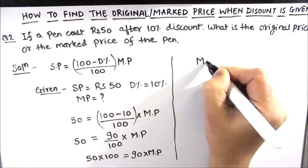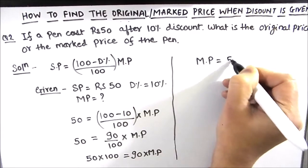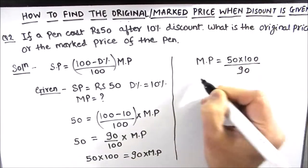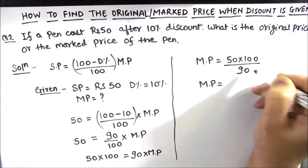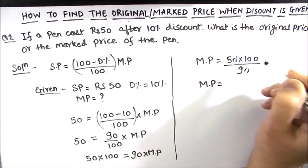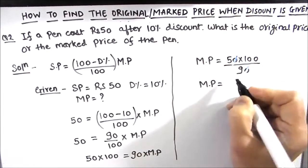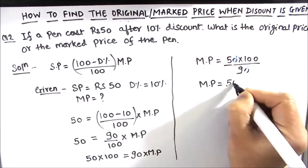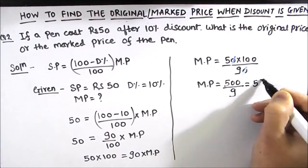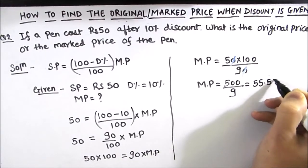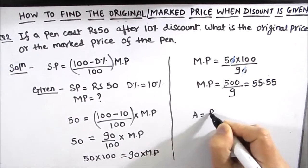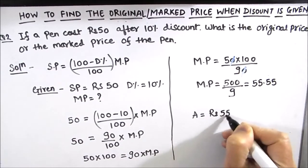So marked price is equal to 50 times 100 divided by 90. Cancelling one zero from numerator and denominator, we get 500 divided by 9, which equals approximately 55.55. So the original price or the marked price of the pen is rupees 55.55.